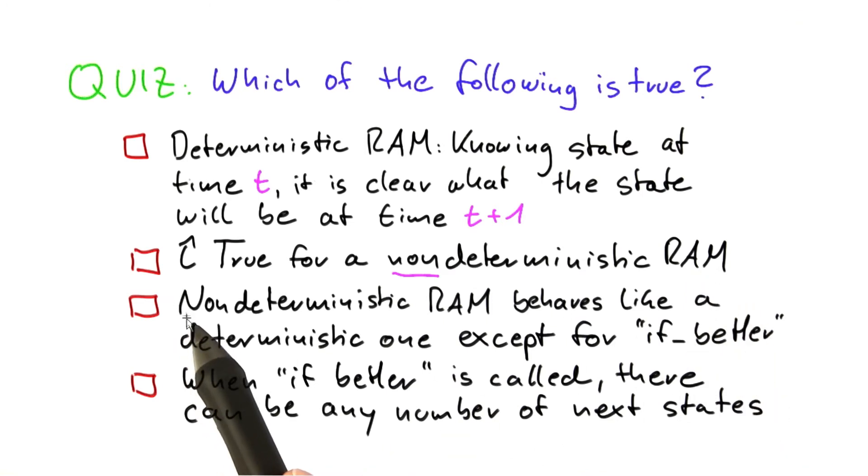The third one is, a non-deterministic RAM behaves exactly like a deterministic RAM, except when we use the if better function.